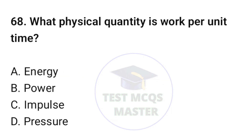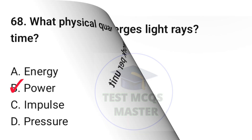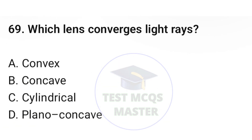Question number sixty-eight: what physical quantity is work per unit time? The correct option is B, power. Question number sixty-nine: which lens converges light rays? The correct option is A, convex.